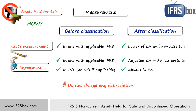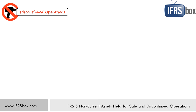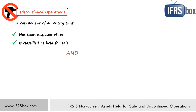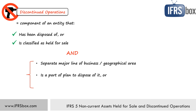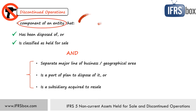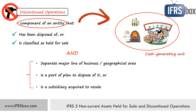Now let's talk about the second topic of IFRS 5: discontinued operations. A discontinued operation is a component of an entity that has either been disposed of or is classified as held for sale, and it represents a separate major line of business or geographical area of operations. It is part of a plan to dispose of it, or it is a subsidiary acquired exclusively for resale. A component of an entity is a part of a company that you can distinguish from the rest — in other words, it is a cash-generating unit or a group of cash-generating units, as defined in IAS 36.